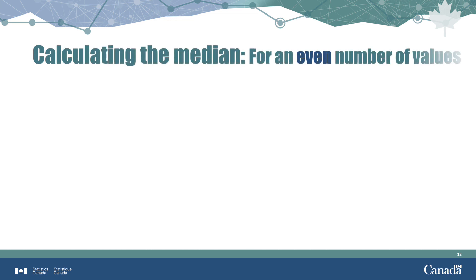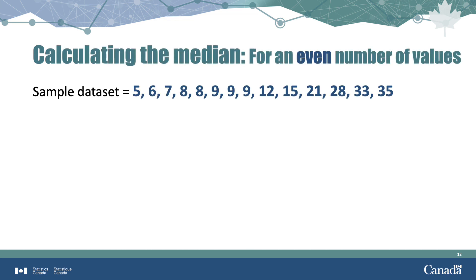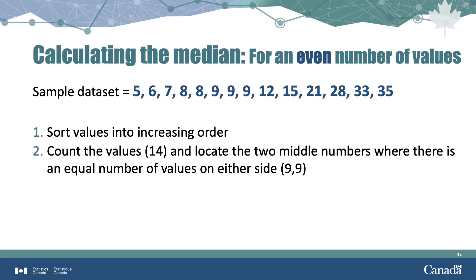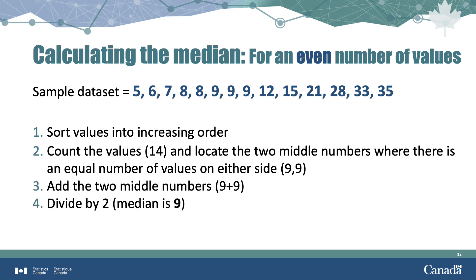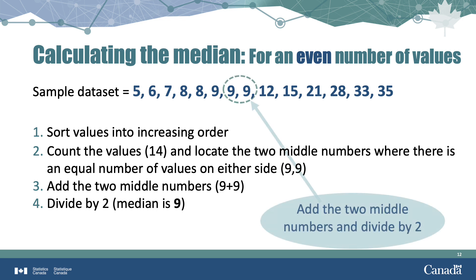Next, we take a look at when there is an even number of values in a dataset. We place the values in order, count the values, and locate the two middle numbers — the two where there is an equal number of values on either side of them. Then add those two middle values together and divide by 2. In this example, we see the median is once again 9.